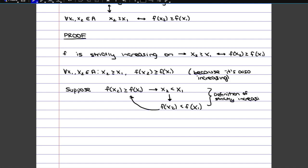Since this completely contradicts what we knew was true at the beginning, x2 cannot be smaller than x1, which means it must actually be bigger or equal to x1. And that completes the proof for the first part.